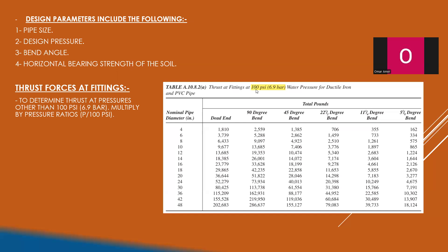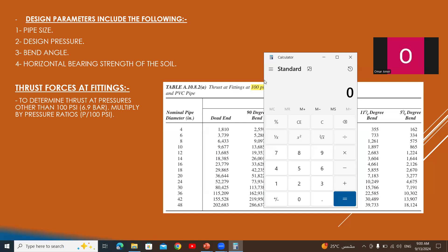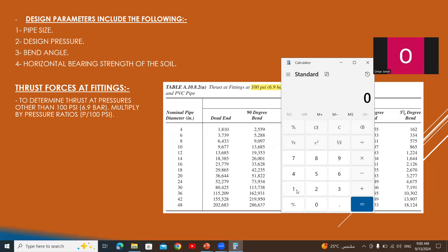An important note: this tabulated value is for a design pressure inside the pipe of 100 psi, equivalent to 6.94 bar. If we have a different pressure value, we must multiply by a ratio between the pressures. For example, if the pressure is 120 psi, we take the value 13,685 and multiply by the ratio of 120 to 100. So the thrust force will increase to 16,422 lb, as pressure increases the thrust force.